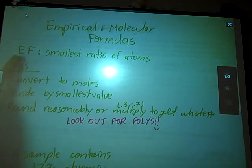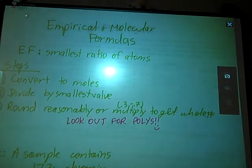So empirical formulas, EF for short, is the formula of a compound, but it's the smallest ratio of atoms. So this does not tell you how many atoms are actually present in the compound, but simply the smallest ratios of those atoms to one another.